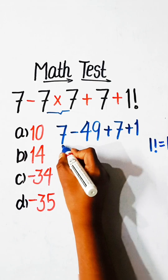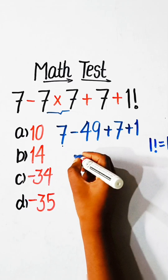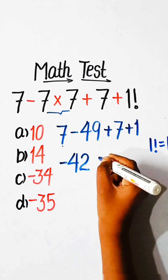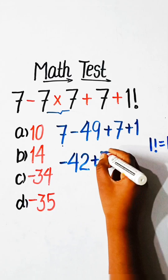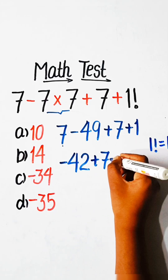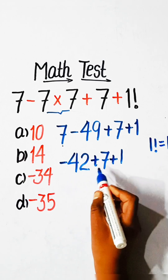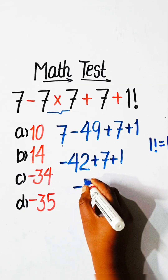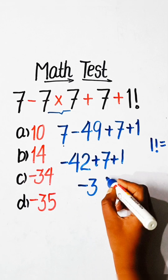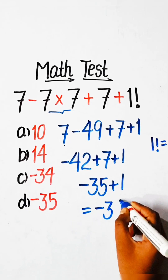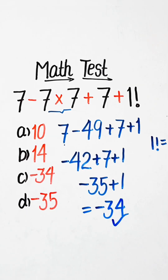Now 7 minus 49 is negative 42, then minus 42 plus 7 plus 1. Minus 42 plus 7 gives us minus 35, plus 1 gives minus 34. So minus 34 will be our correct answer, and Option C will be the correct one.